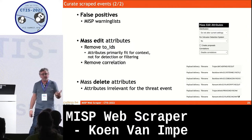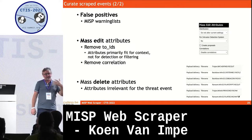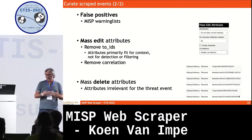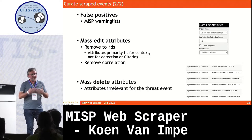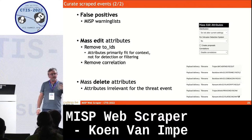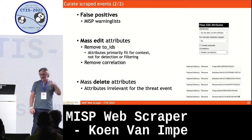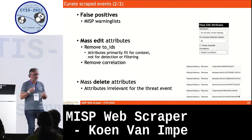False positives can be handled with the warning list. For mass edit of attributes — sometimes attributes are extracted that are useful as contextual information, like cmd.exe or netstat.exe, but you don't want the IDS flag set to true. If you have many such attributes, instead of checking them one by one, you can do a mass edit: select all the attributes and change the IDS flag in bulk. You can do the same for the correlation field. You can also do mass delete of attributes, for example, malware naming conventions you don't want to push to customers.